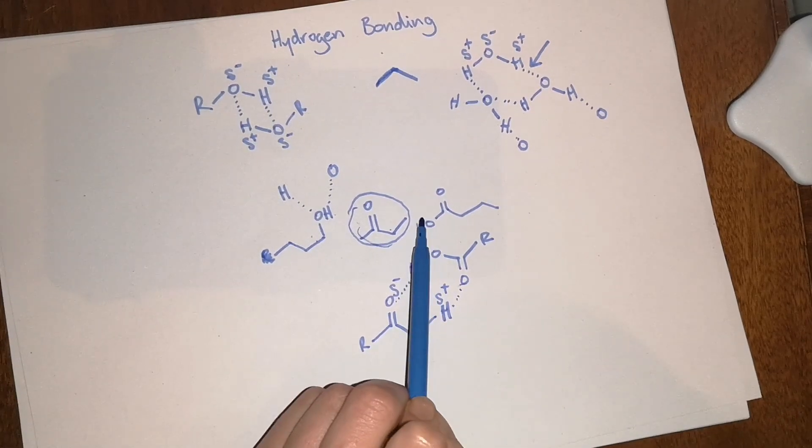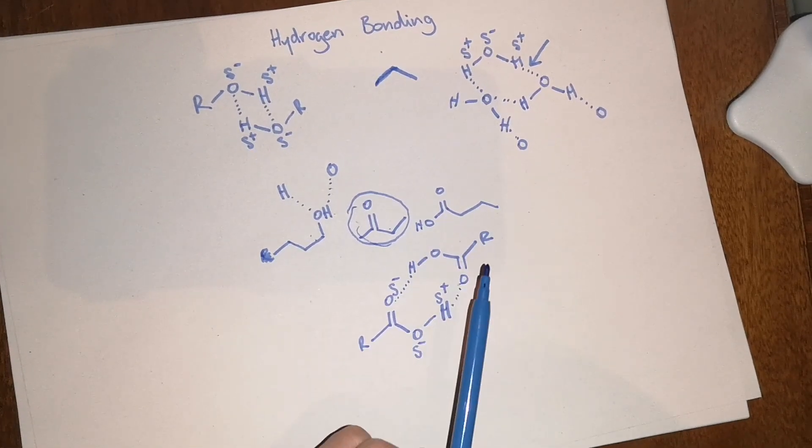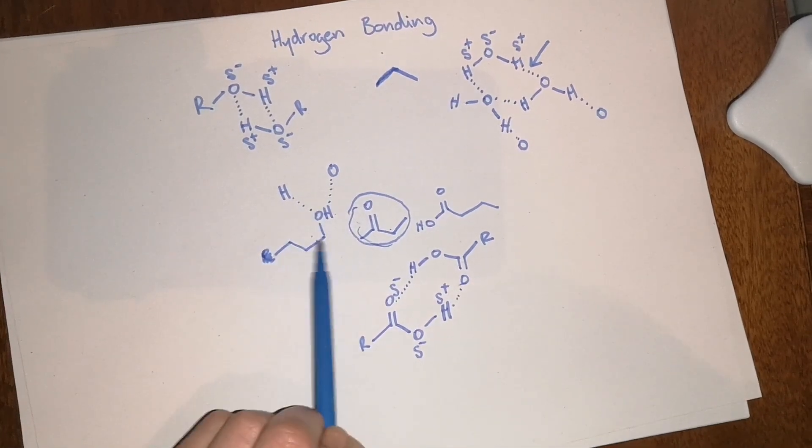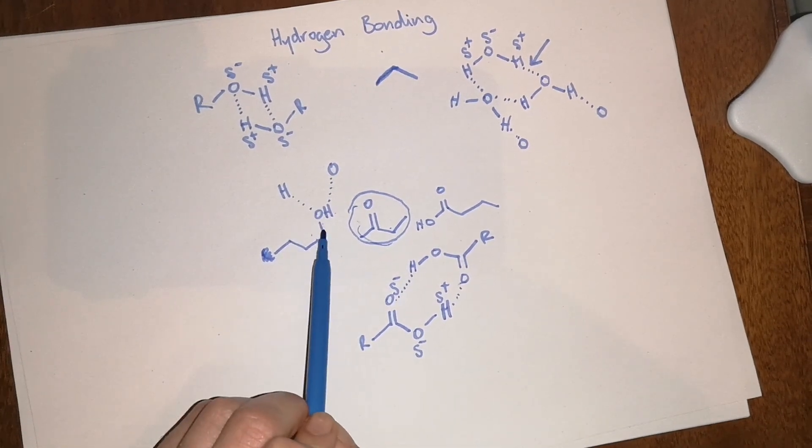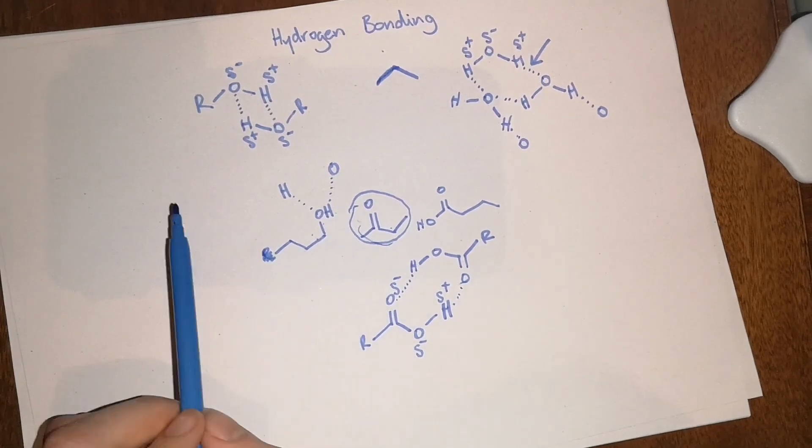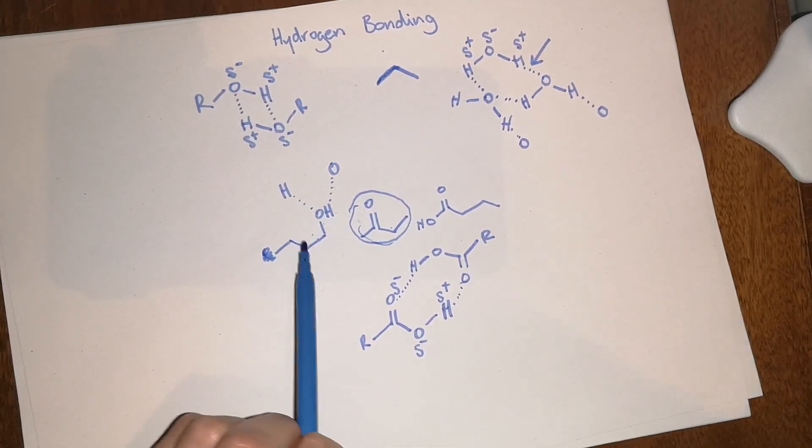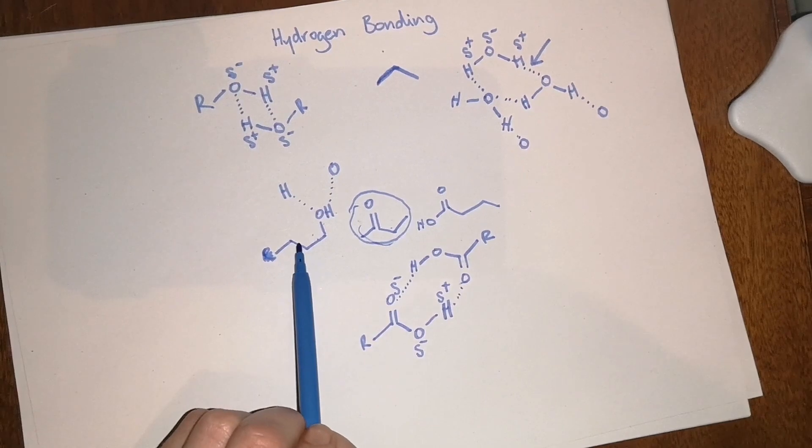So many carboxylic acids will actually be solid, like benzoic acid, and then an awful lot of alcohols will be high boiling solvents or liquids. For example, methanol and ethanol are lower than 100 degrees, but I think they're around 70 or 80 degrees is the boiling point.